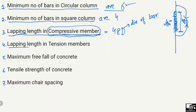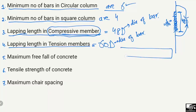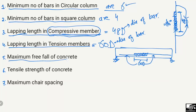The next point is the lapping length in a tension member. The lapping length in a tension member should be equal to 60 times D, where D is the diameter of the steel bar. For example, in a simply supported beam, if two reinforcement bars are overlapped, this lapping length should equal 60D.